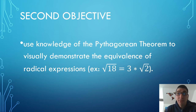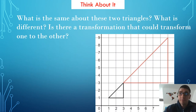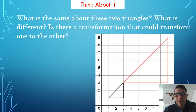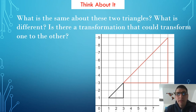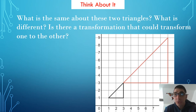Our second objective is to use knowledge of the Pythagorean theorem to visually demonstrate the equivalence of radical expressions — for example, the square root of 18 and 3 times the square root of 2. Let's think about it: what's the same about these two triangles? What's different? Is there a transformation that could map one to the other? You may have noticed that they are both right triangles, and the red larger triangle is 3 times the size of the smaller black triangle. This means there is a dilation of scale factor 3 that will transform the black triangle to the red triangle.